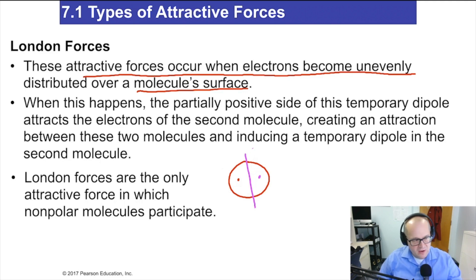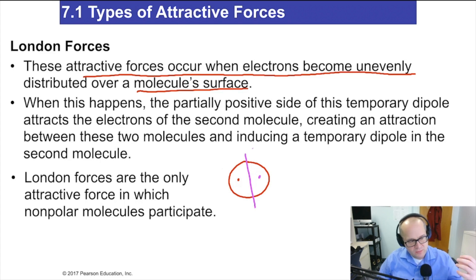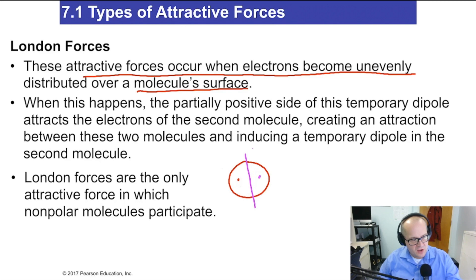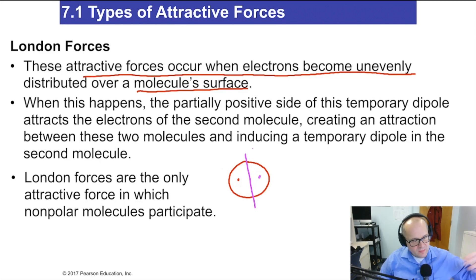It's going to be pretty rare for this helium atom to have a temporary dipole. What I mean by temporary is: it forms, and then it's gone. It forms, then it's gone. It forms, then it's gone again. Temporary — it forms a dipole, positive/negative, and then all of a sudden it's gone.